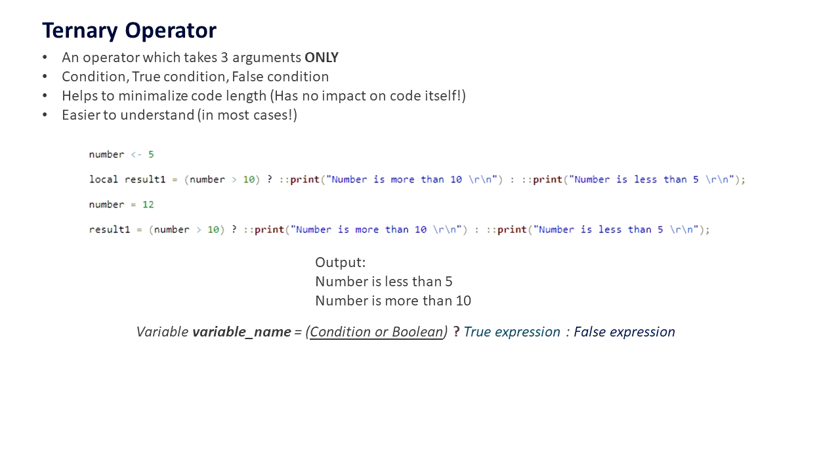The first one checks if the number is more than 10. It will execute the left side of the body. If it's false, it will execute the right hand side of the body. Notice the output is different from the first and second.